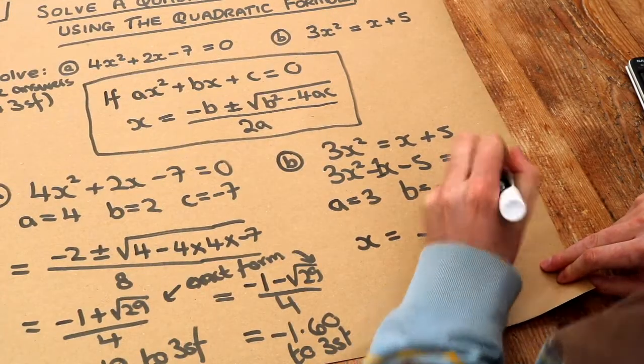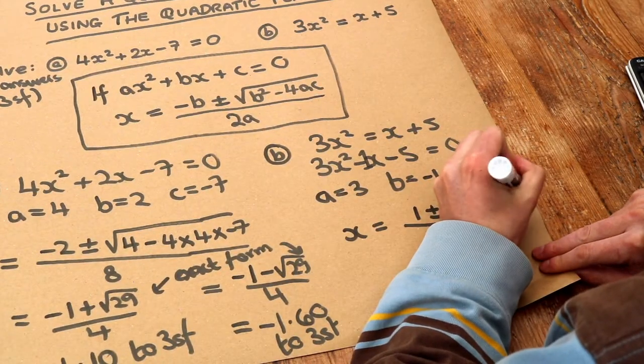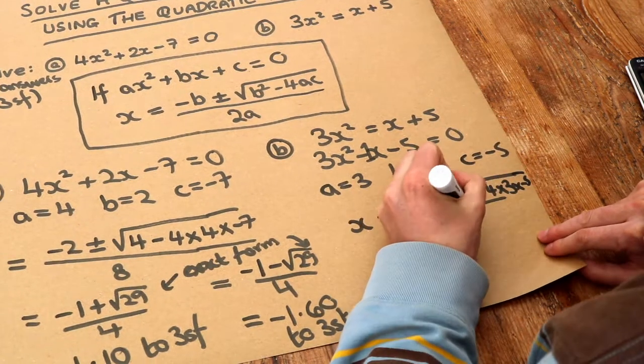So 4 times 3 times negative 5, all over 2a, so 6.